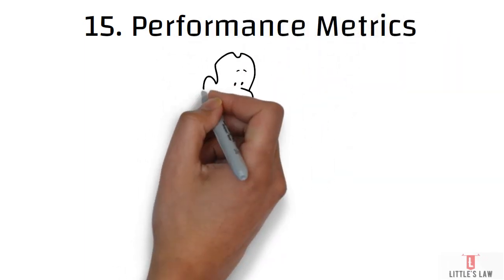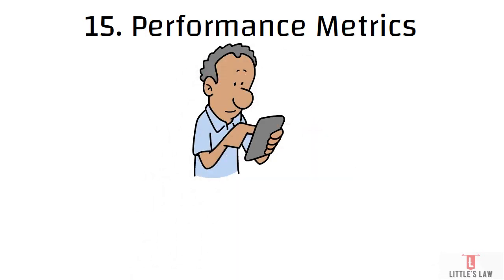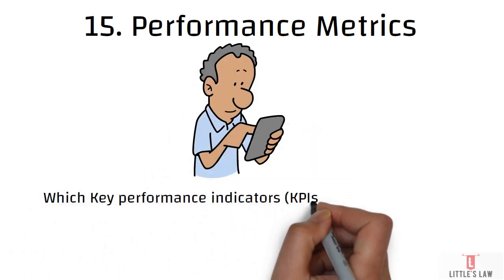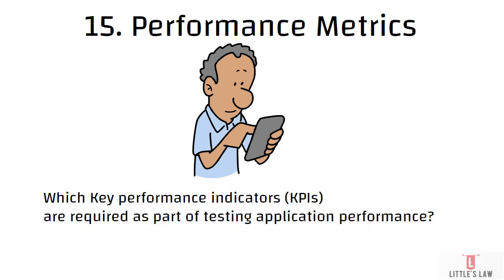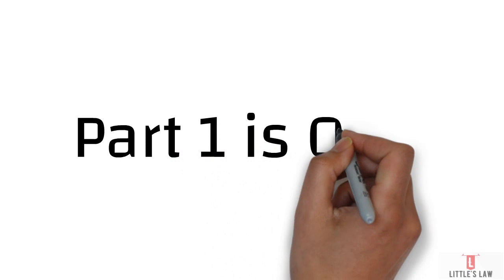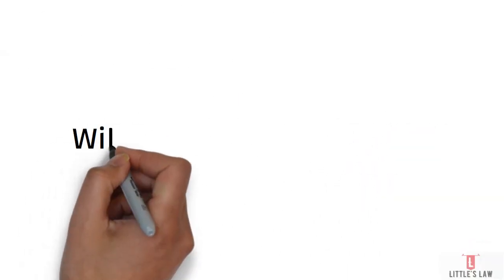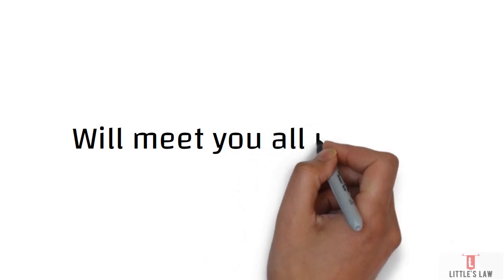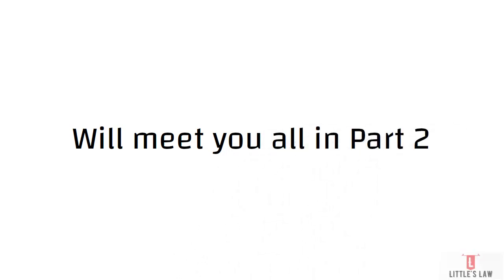The fifteenth and final question of part one covers performance metrics. Ask the client what key performance indicators should be documented for the application. Some clients may ask for percentile response times; others may request minimum, maximum, and average response times, along with monitoring data. You should confirm with the client which KPIs you will collect. With that, part one is complete and we'll meet in part two in the next video. Bye from Asin Shanmugam and Little Sloth.